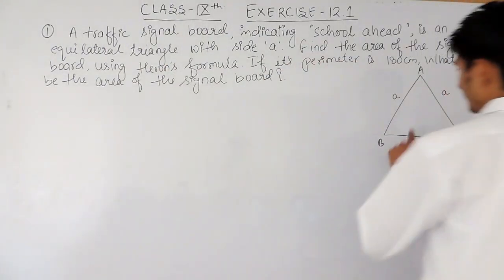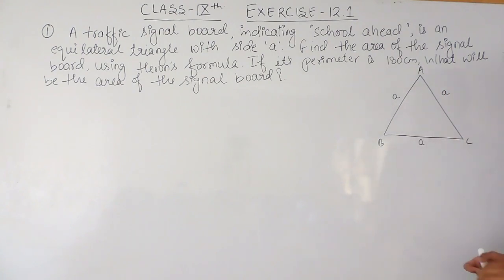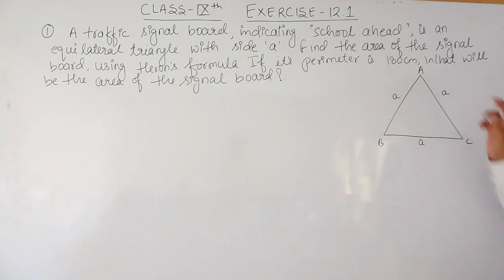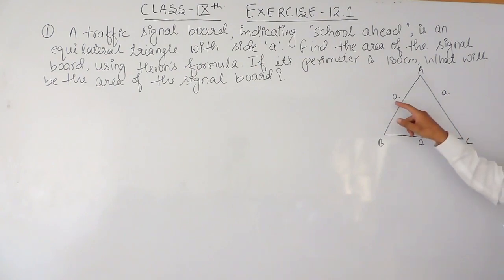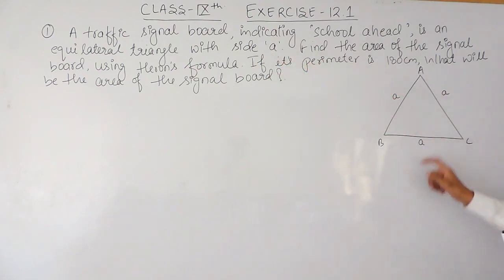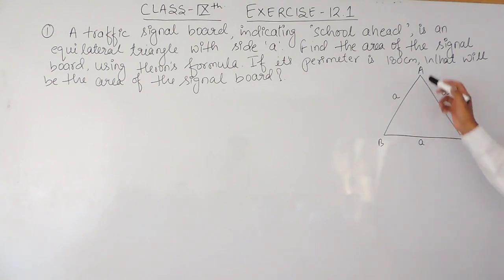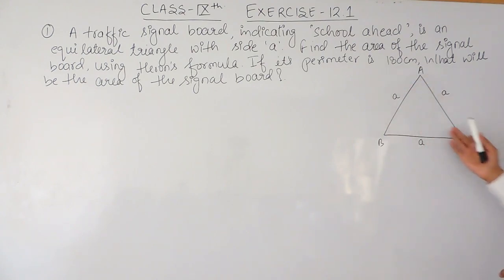You are given a sign board with 'school ahead' written on it, and the sign board is an equilateral triangle. We know that in an equilateral triangle all sides are equal. So if one side is A, that means all three sides must be A. The perimeter is given as 180 cm and you need to find the area.